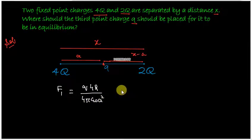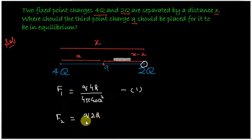Similarly by Coulomb's law, F2, the force on charge Q due to the other charge 2Q, would be Q times 2Q upon 4πε₀ times r. In this case the distance is (x minus a)².